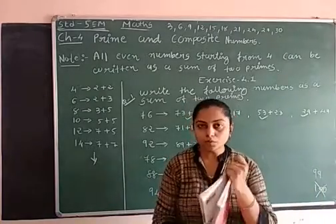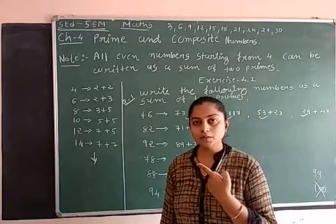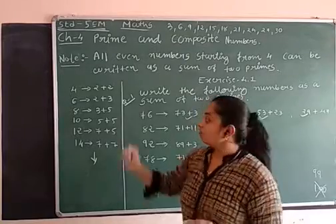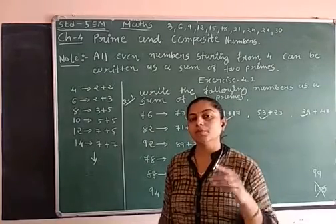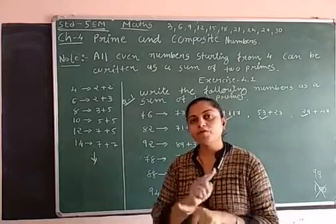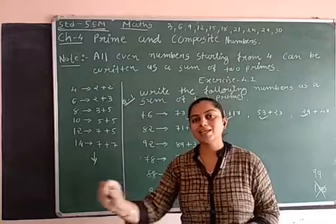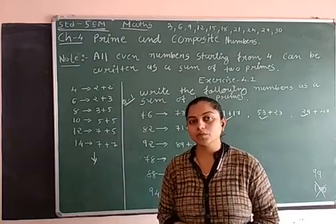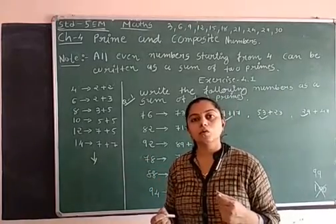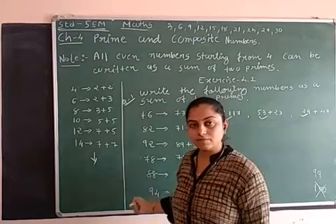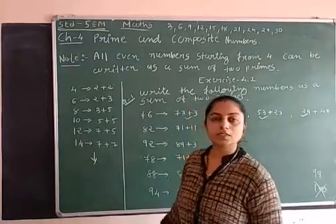With this question your exercise 4.1 is over and the chapter was very small, only two pages were there. What is prime number, what is composite number, how to find the numbers, this lab activity also I explained. This one is your activity and backside exercise question 1 I discussed over here and question 2 answer is 99. So chapter is complete. Your chapter 4 is over.